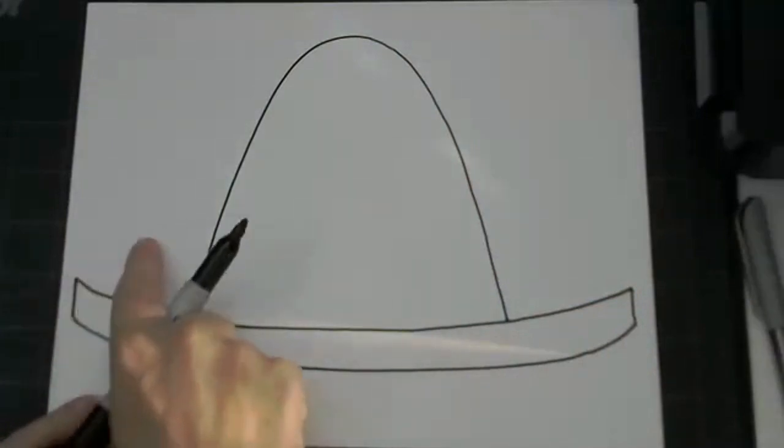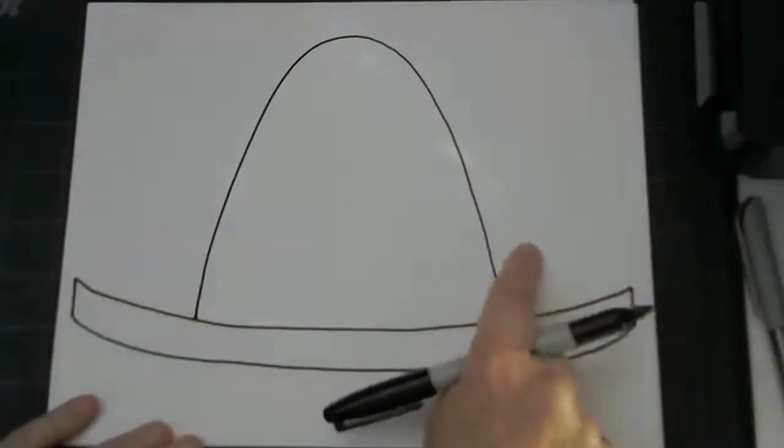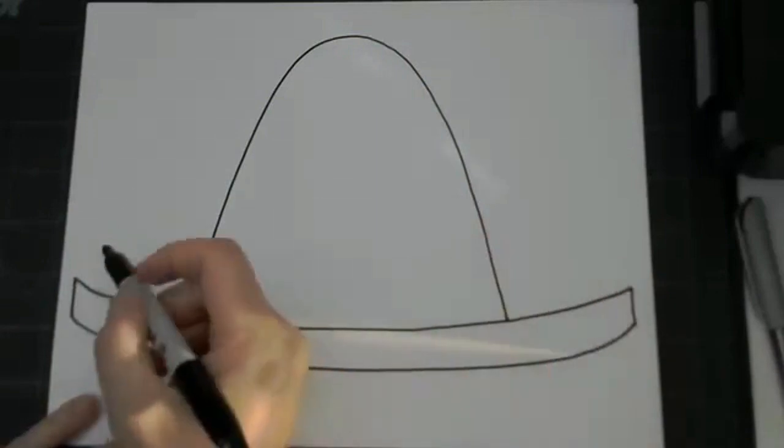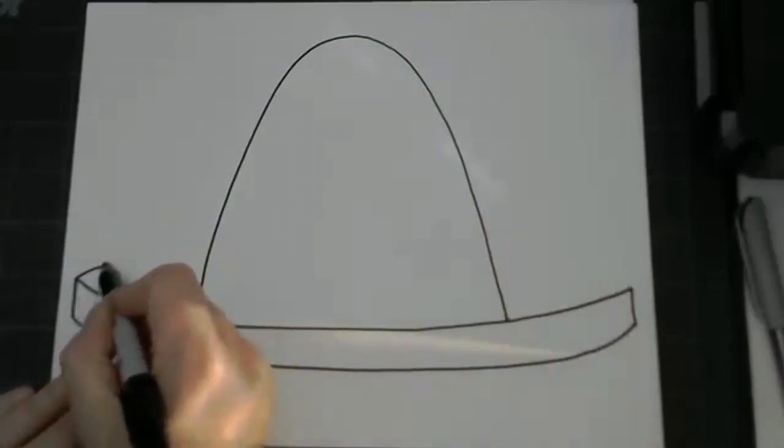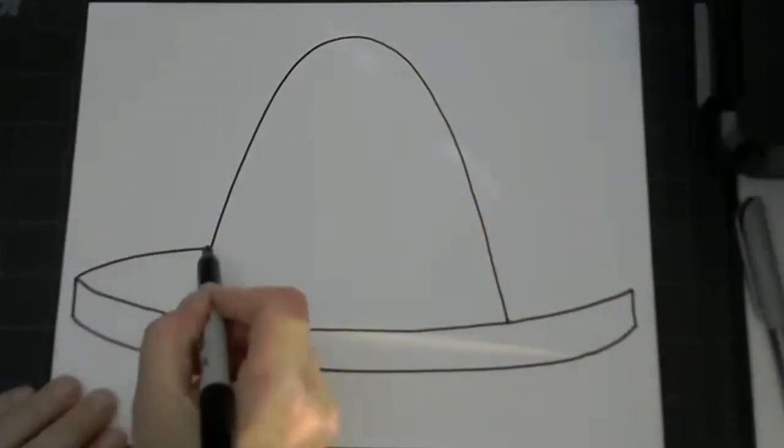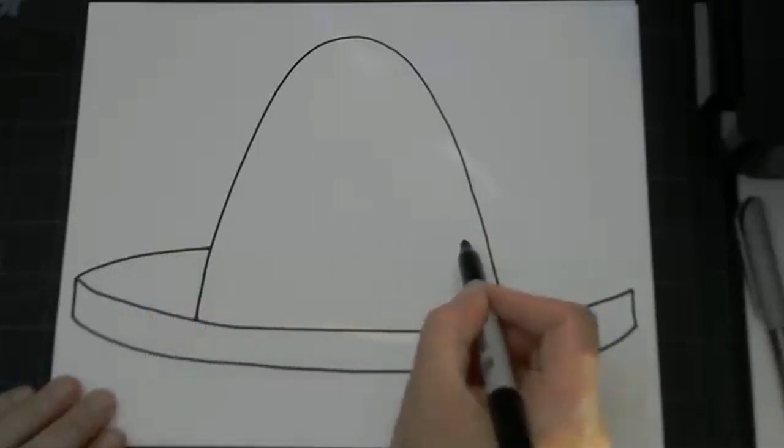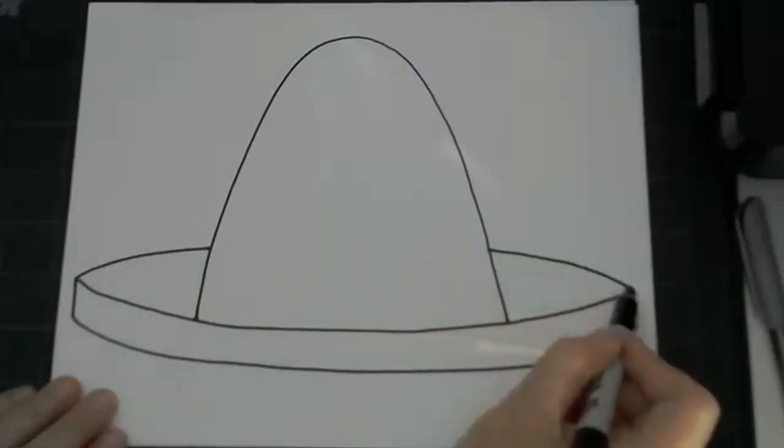And then I have to do the back side, and I want to make it look like it is three-dimensional. So I'm going to make it a little bit curved, and I'm going to go right up to the cap, and then I'm going to skip over and do the same thing over to the other side. Now I have a basic sombrero.